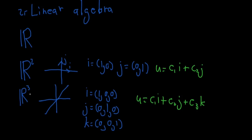And the same is true for R3. In R3, you have three base vectors. In this example, I have these three base vectors. But you can have many other base vectors — they only have to be linearly independent. And I can have any vector in R3 represented as a linear combination of some constants and my base vectors.